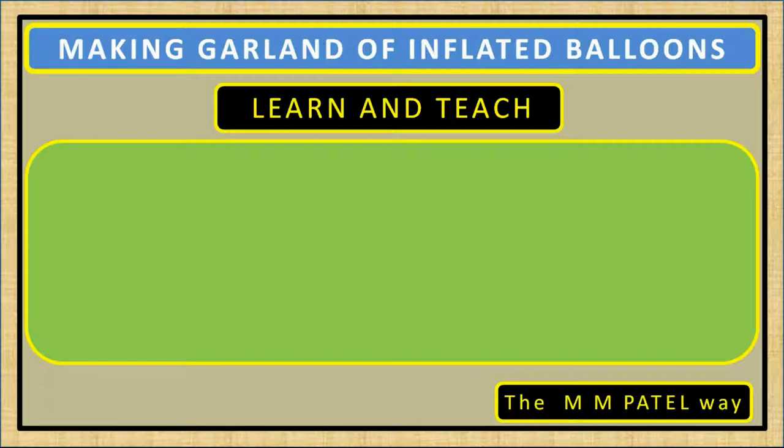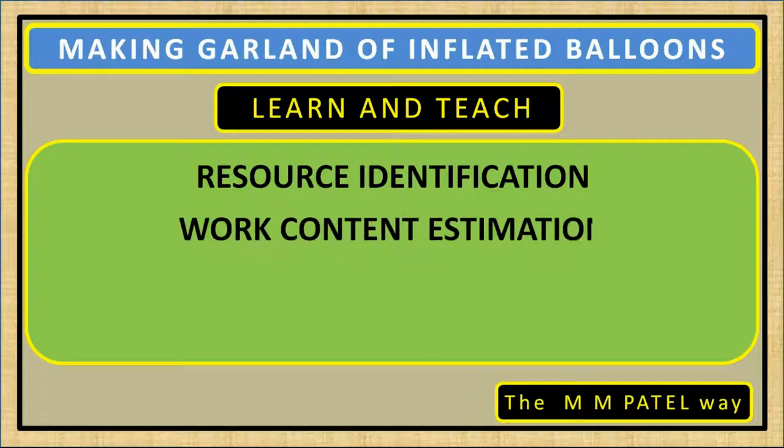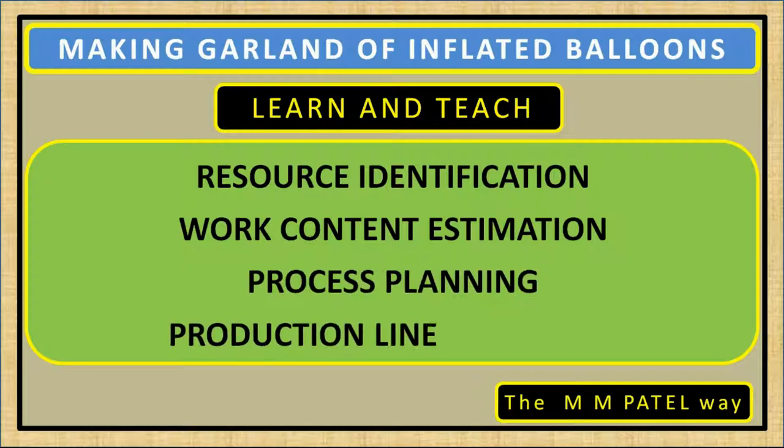Let us revisit the learning plan: resource identification and utilization, work content estimation. The job of a supervisor, the job of a leader primarily is work content estimation. If you fail in work content estimation, your planning will not take place properly. When the work is in process, if at that point you realize that your estimation was wrong, you will have to make a lot of adjustments. Therefore our primary job is to estimate work content accurately. The next: process planning and production line balancing.